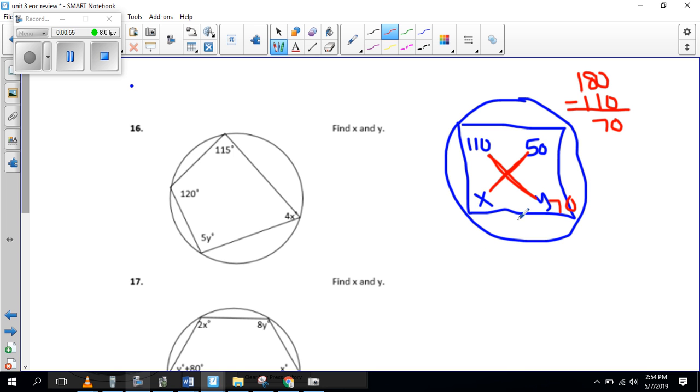So the same thing with this one here. So if I want to figure out x, and this was y, if I want to figure out x, what I would do is 180 minus 50 and I get 130. Okay, so easy.